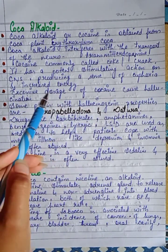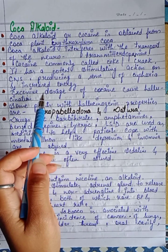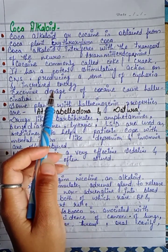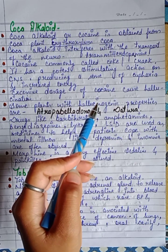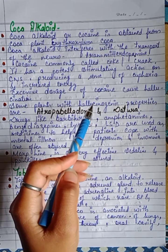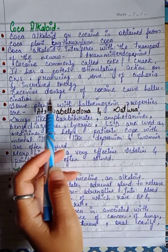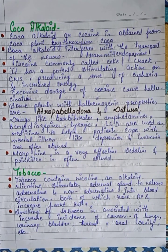Cocaine has a potent stimulating action on the central nervous system, producing a sense of euphoria and increasing energy. Athletes often use it to increase energy. Excessive doses of cocaine cause hallucination — meaning they produce delusions.